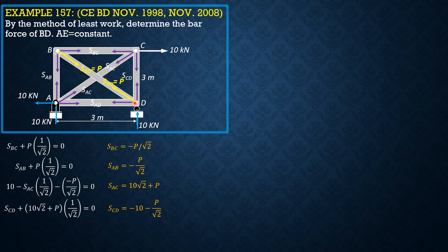At joint D, summation of forces in X with leftward positive: SAD plus P times 1 over square root of 2 equals zero, so SAD equals negative P over square root of 2. You will check if joint D is in equilibrium by summing vertical forces, and also check joint A support by summing forces in X and Y — all must equal zero to verify these answers.